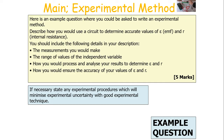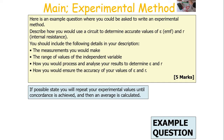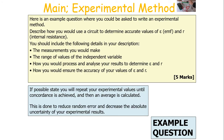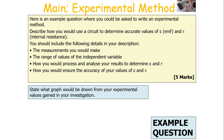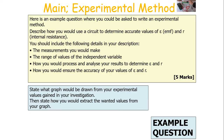If necessary, state any experimental procedures which will minimise experimental uncertainty with good experimental technique. For this electricity question, you might want to talk about only having the circuit turned on when you're taking a measurement to reduce the circuit heating up unnecessarily. If possible, state you'll repeat your experimental values until concordance is achieved and then an average is calculated. This is done to reduce the random error in your experimental results and decrease the absolute uncertainty of your experimental values, because when calculating absolute uncertainty with repeats it's range over two — so if you repeat and discard anomalies, your range will be a lot smaller. Remember to state what graph will be drawn and how you'd extract the wanted values — in this case, the EMF and the internal resistance — from your graph.